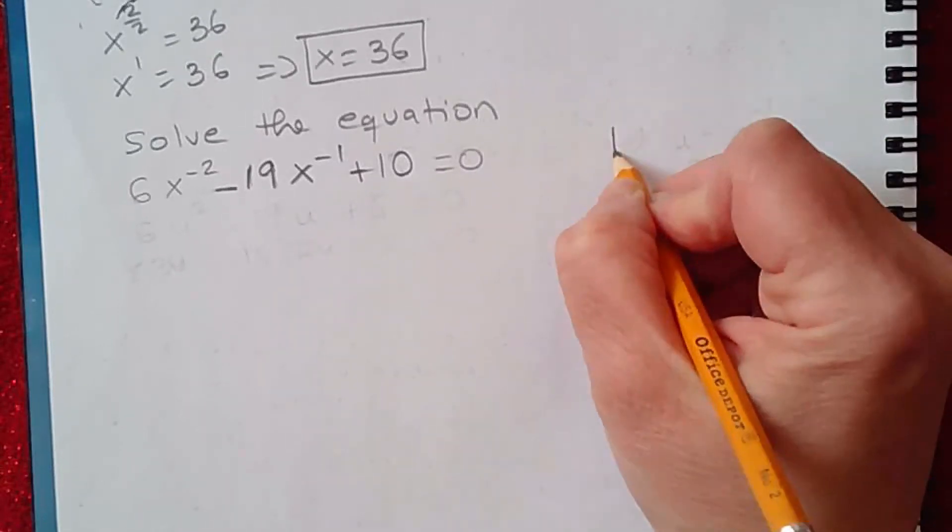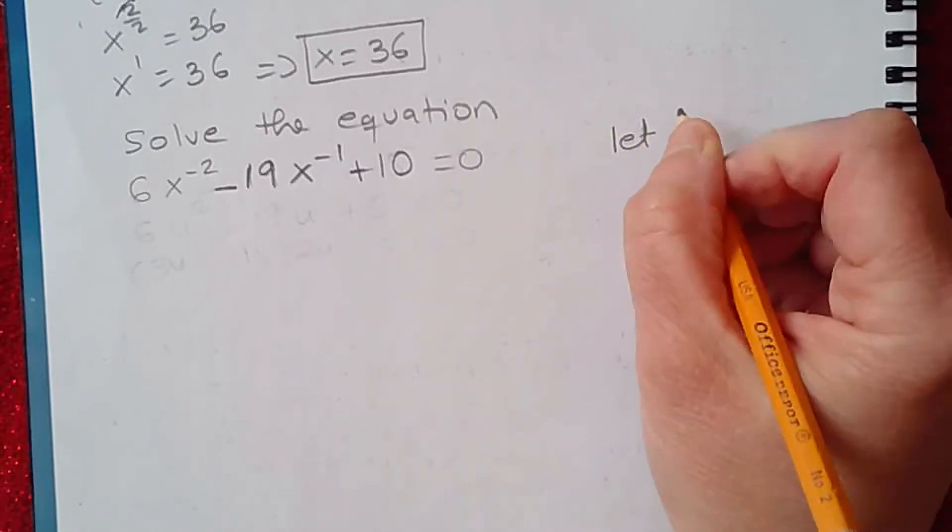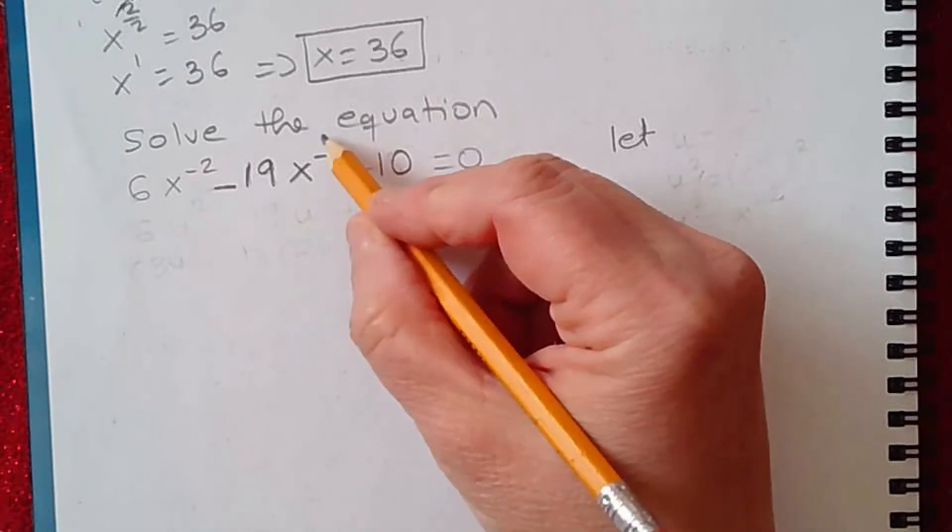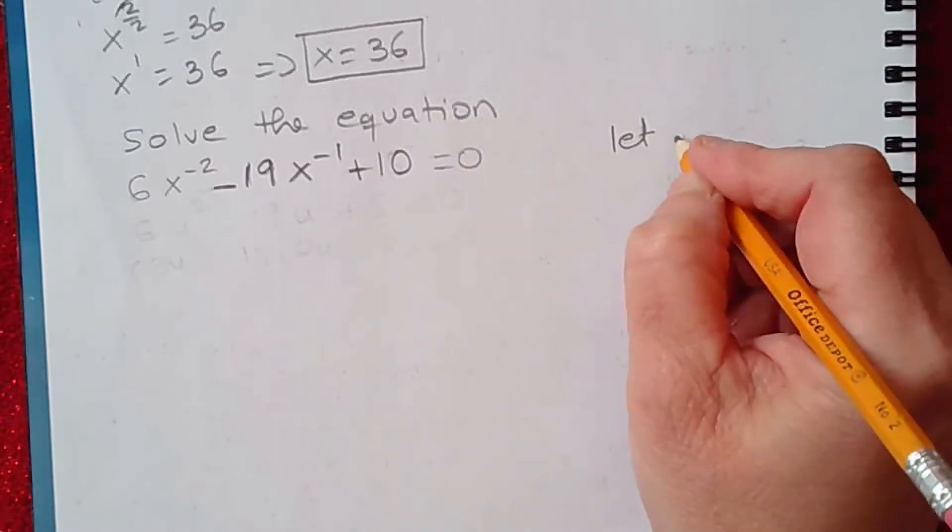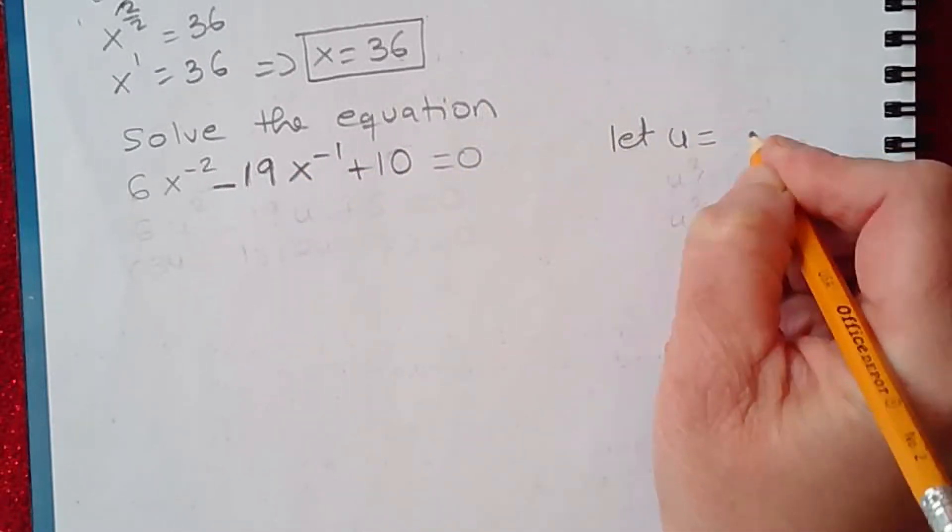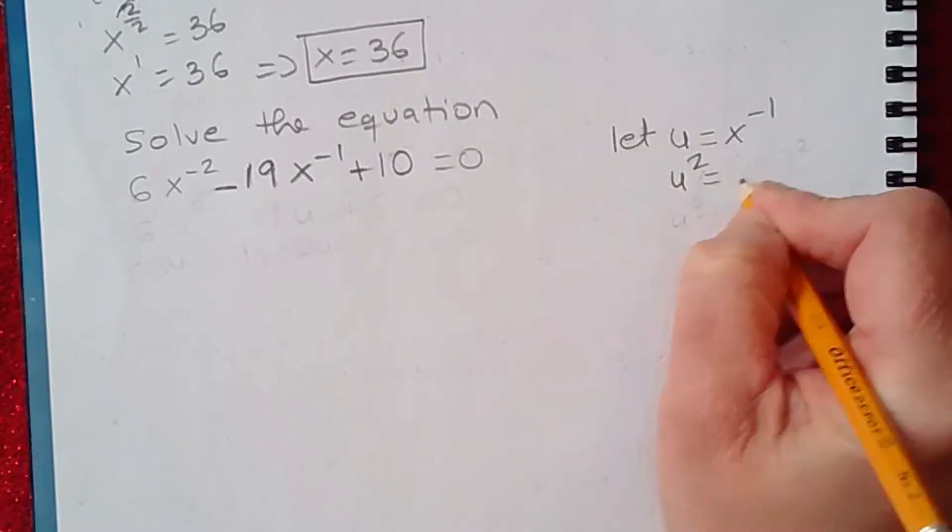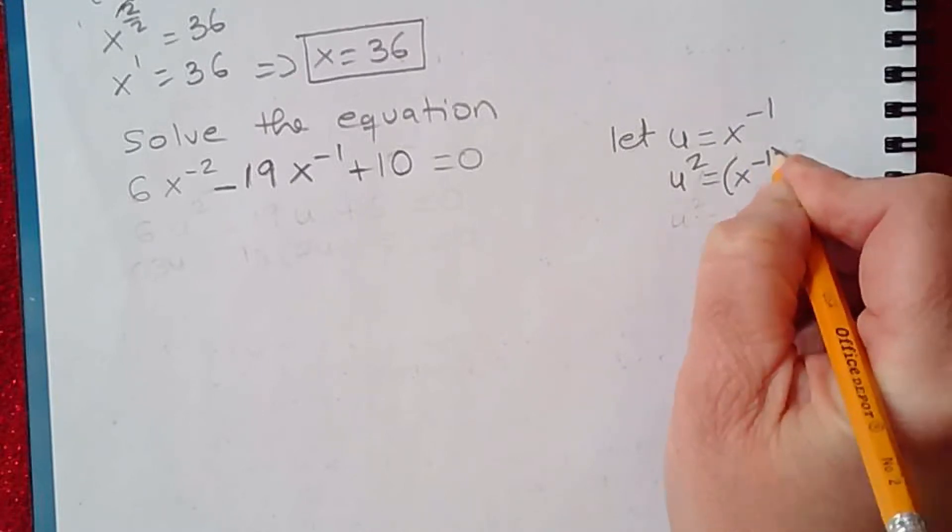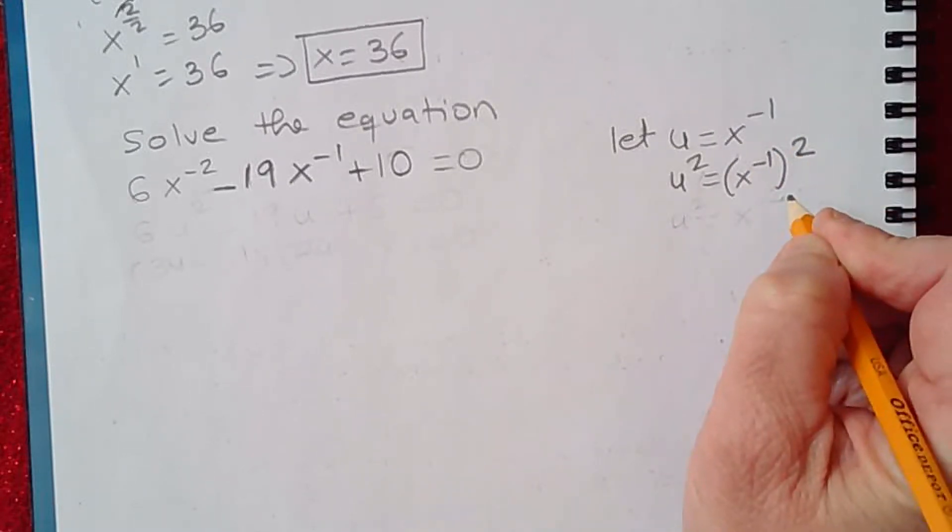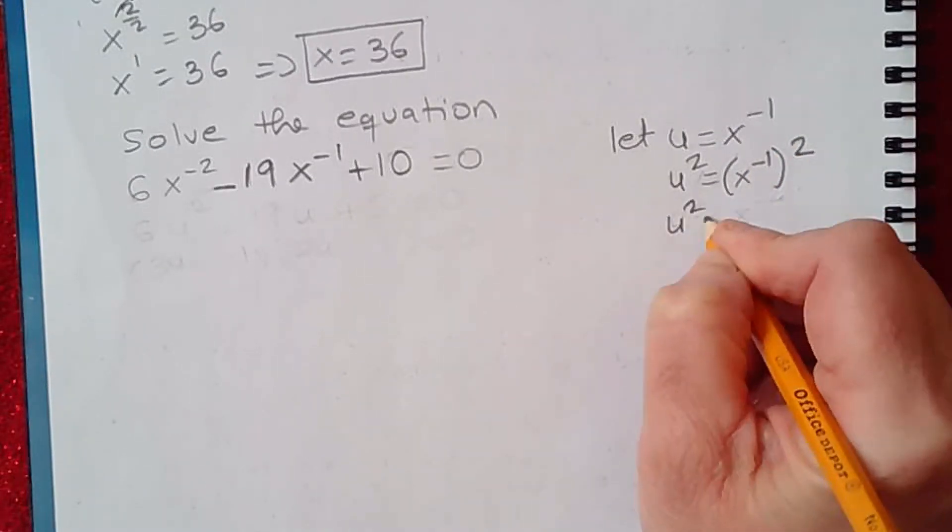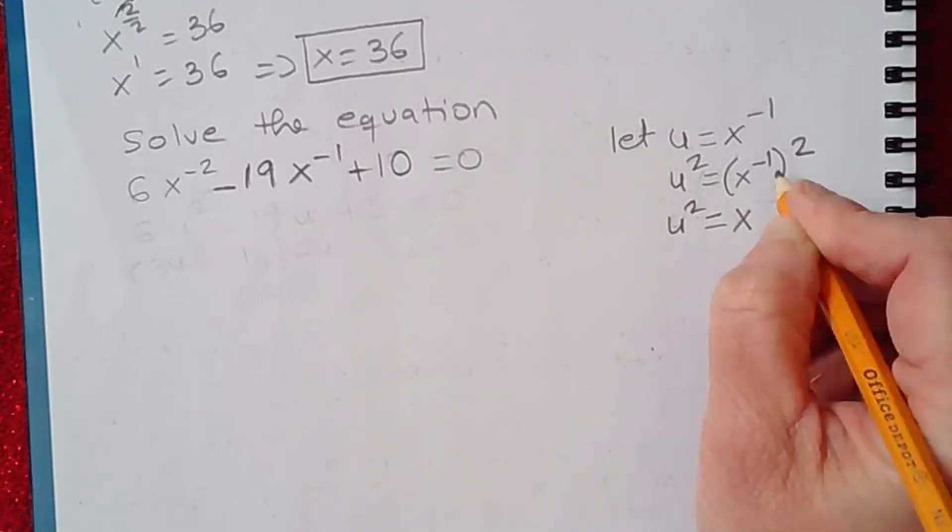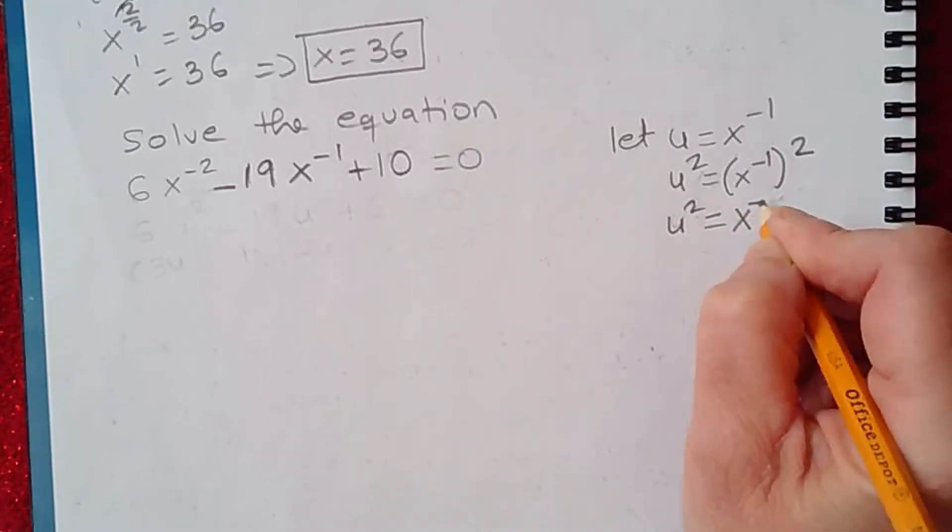x to the negative 2 is really the square of x to the negative 1. So if we let some variable equal to the variable part of the middle term, if we let u equal x to the negative 1, that means u squared would be x to the negative 1 squared. That would give me u squared equal to x to the negative 1 times 2 is negative 2.